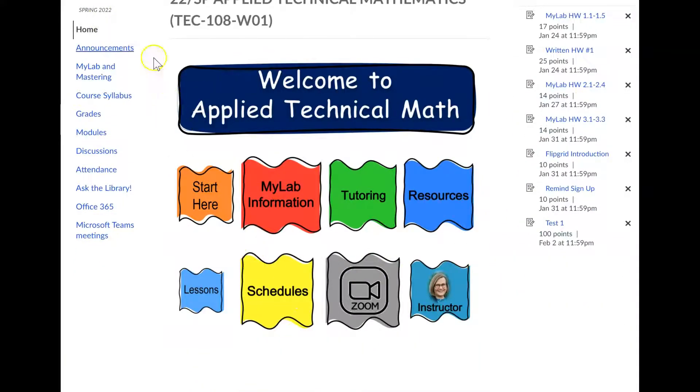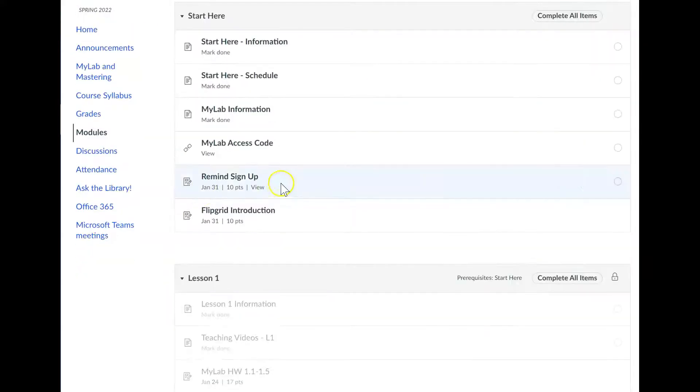And so if you were to click on any of these, of course it would take you somewhere, but right now I'm going to click on Start Here. It is important that you go through the Start Here module. And I notice I have prerequisites. Start Here is a prerequisite for your Lesson 1. So you wouldn't be able to unlock Lesson 1 until you go through and view or mark as done each one of these.